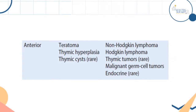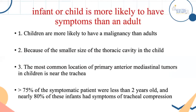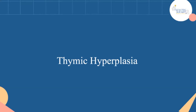Highlighting specific conditions of the anterior mediastinum: symptoms are more common in children than adults due to higher malignancy rates and smaller chest size. 75% of symptomatic patients are under two years old. Don't delay treatment, as masses in this age group can grow rapidly and cause sudden airway collapse. Most symptoms relate to airway compression.